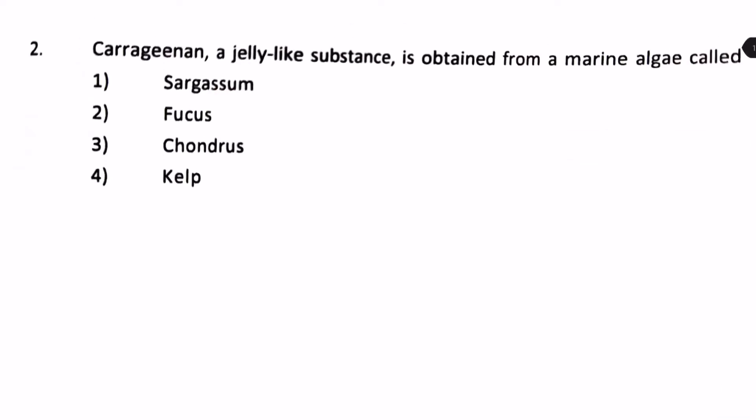Carrageenan is a jelly-like substance. It is obtained from a marine algae called. The options are 1. Sargassum, 2. Fucus, 3. Chondrus, 4. Kelp. From here,